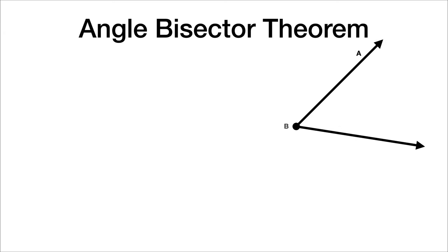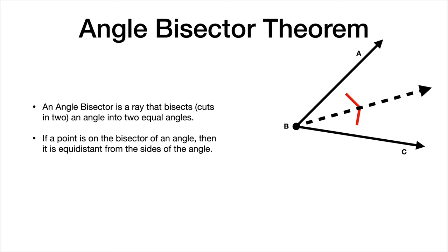An angle bisector, to remind you, is a ray that bisects or cuts in two an angle into two equal angles. So these two new angles are going to be congruent. Here is the theorem: if a point is on the bisector of an angle, then it is equidistant from the sides of the angles. So these two red lines would be equidistant from the angle. The line from the angle bisector to the sides must be perpendicular for this to be true. In this case, it is perpendicular, which makes it true.